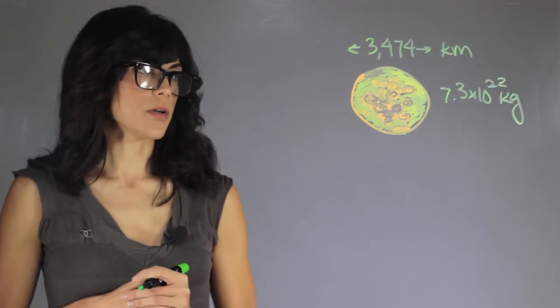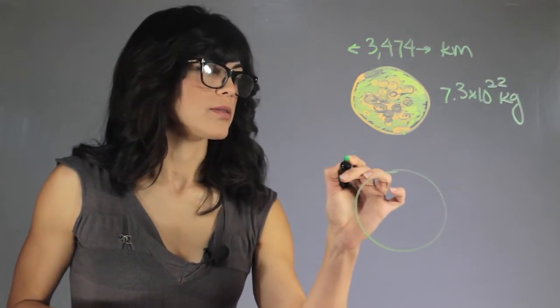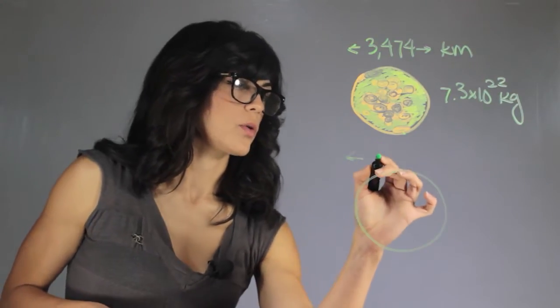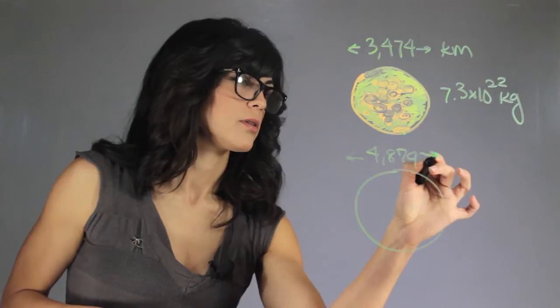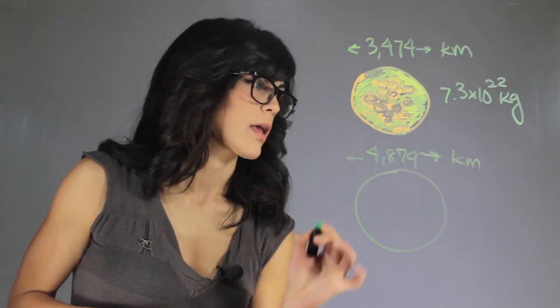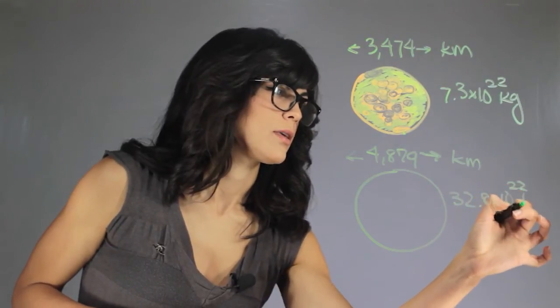So what does Mercury look like in terms of size and diameter? The diameter of Mercury is only 4,879 kilometers and it weighs 32.8 times 10 to the 22nd kilograms.